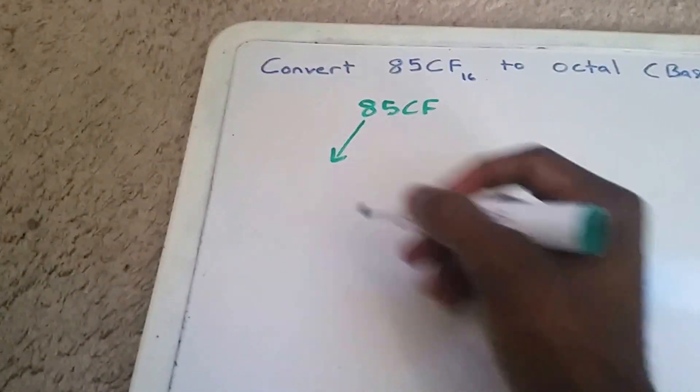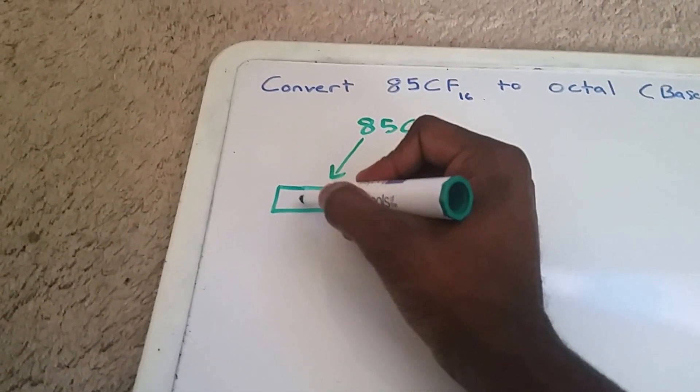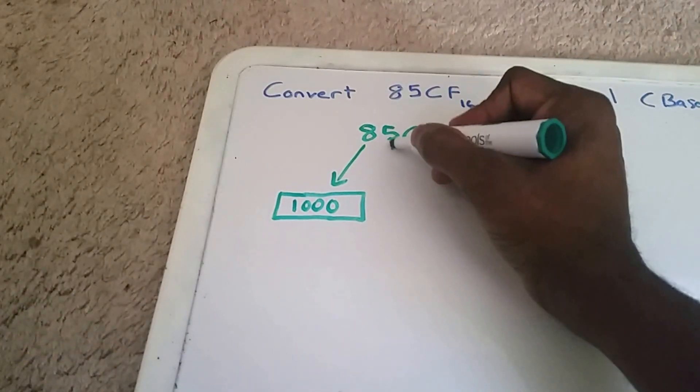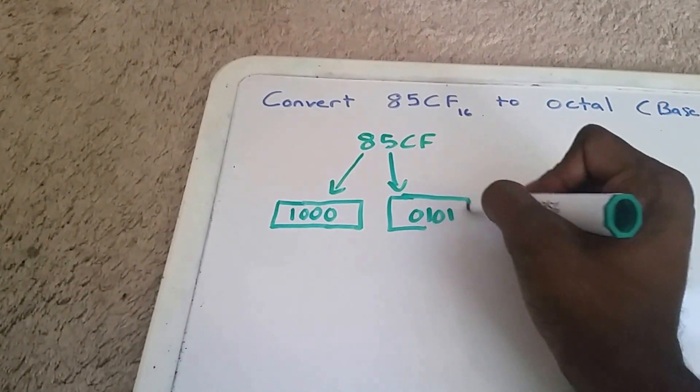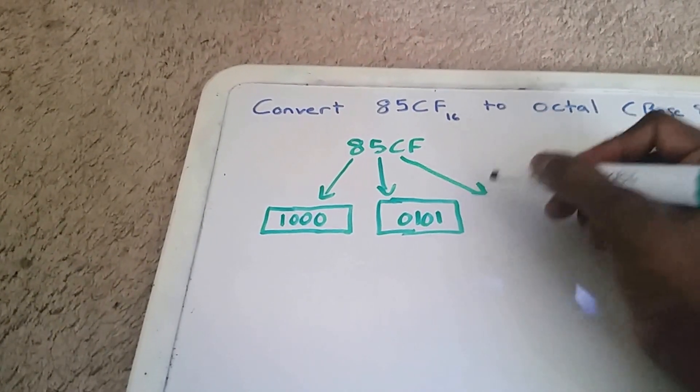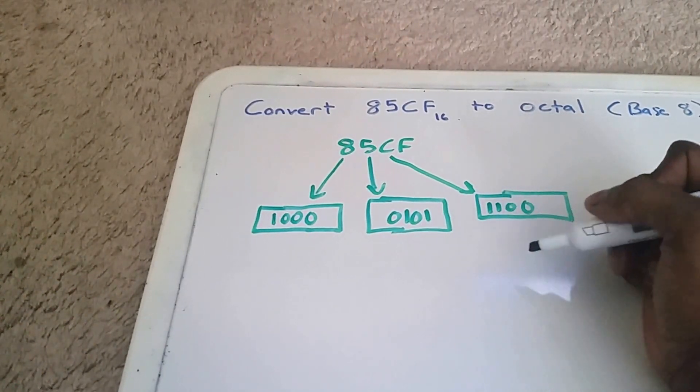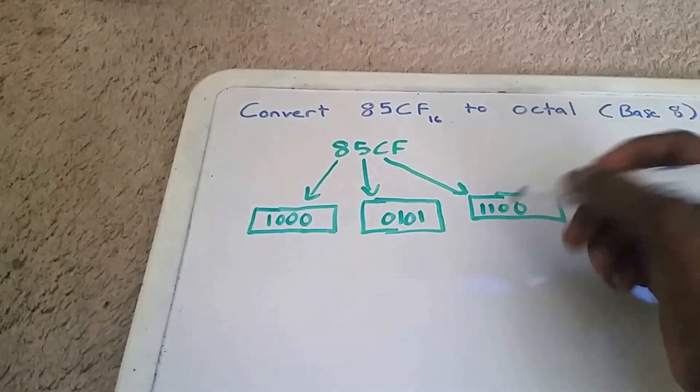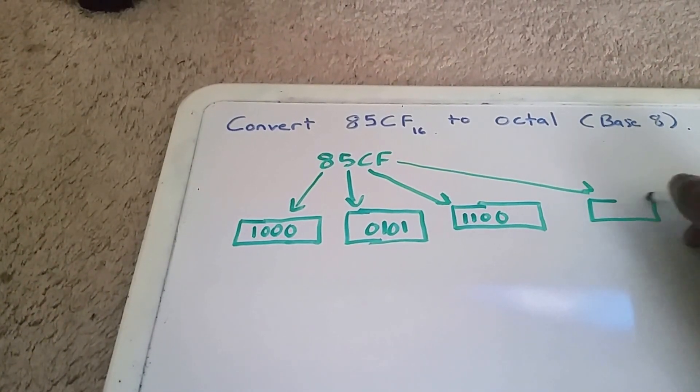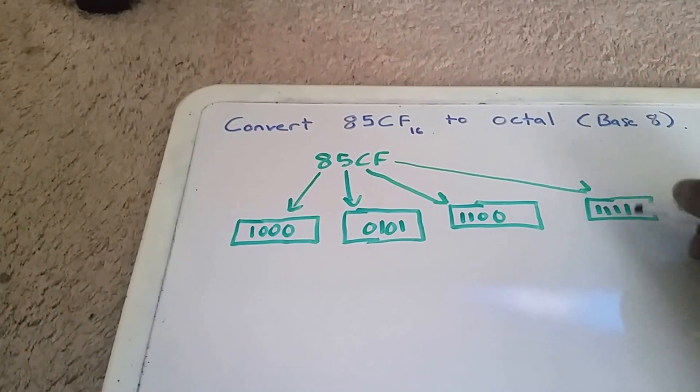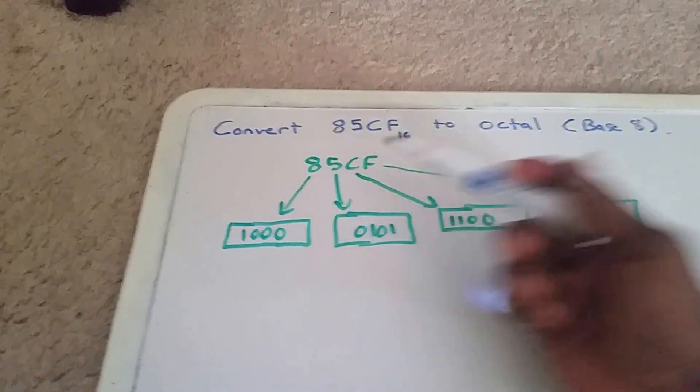We're going to convert it into binary or base 2. So 8 in base 2 would give me 1000. 5 would give me 0101. C would give me 1100 because that's the number 12, and F would give me 15, which is 1111. Okay, so this is base 16 in base 2.